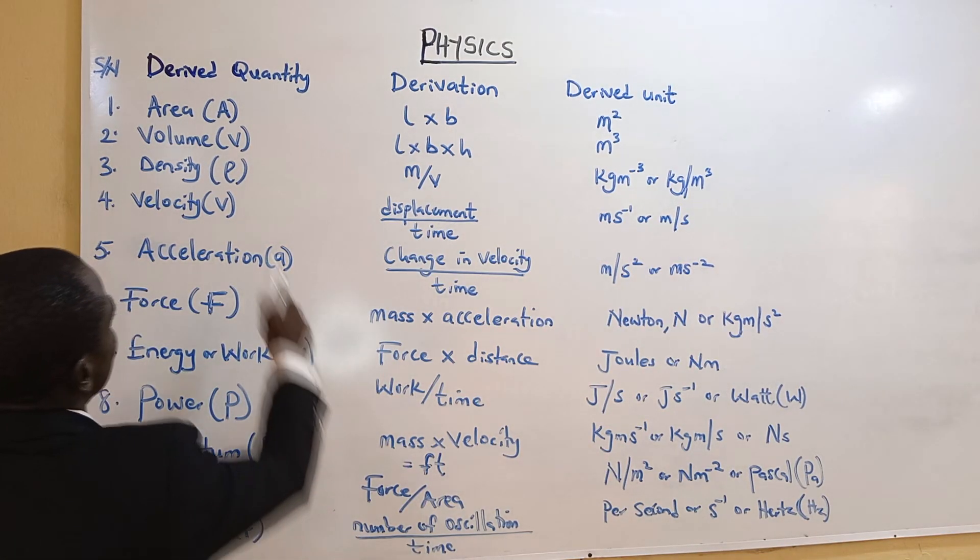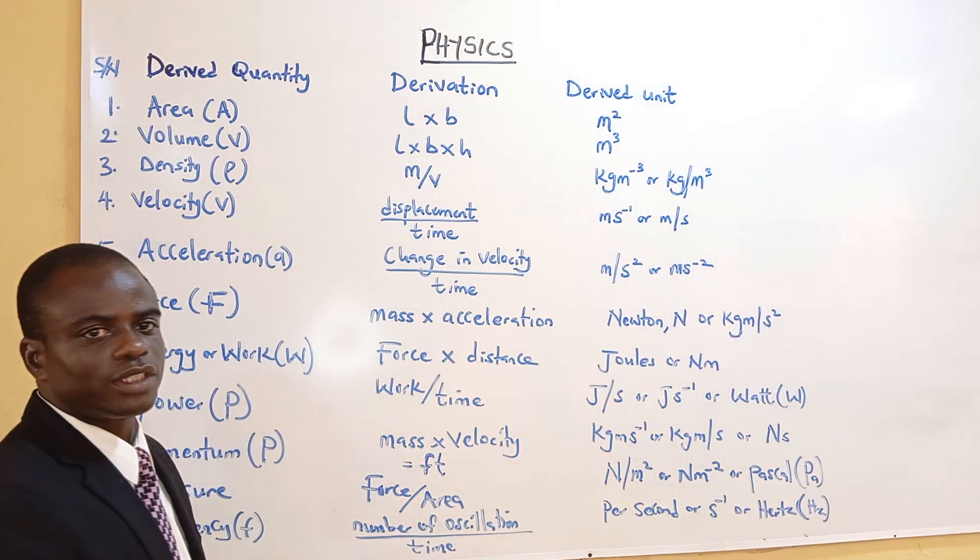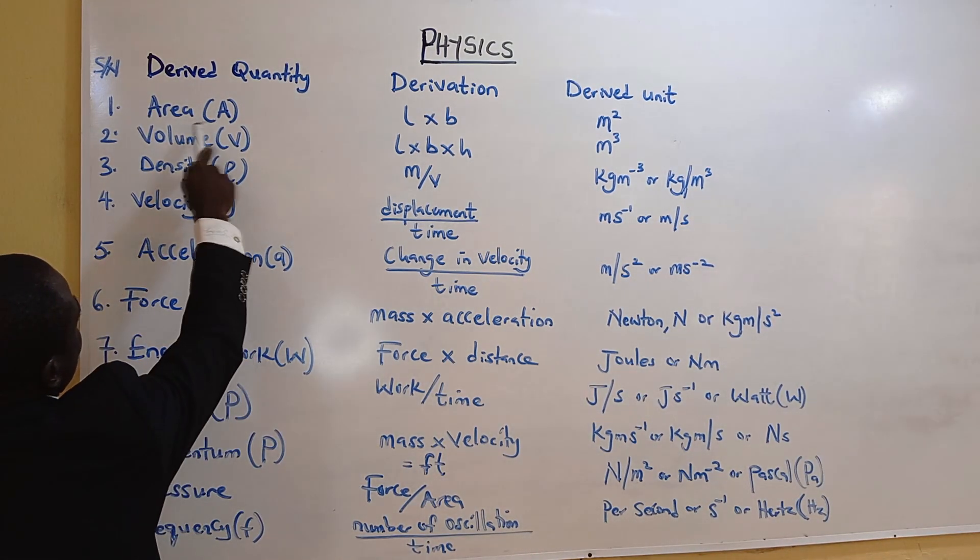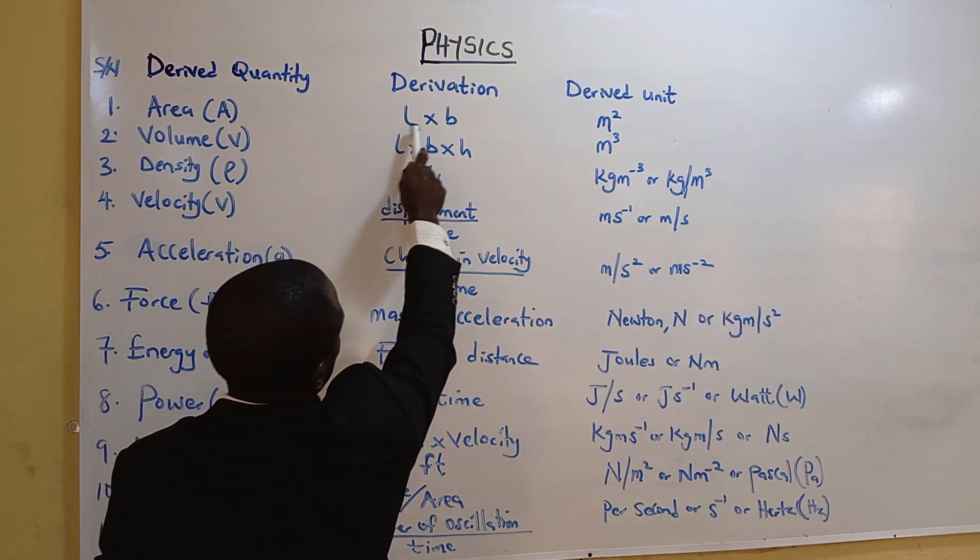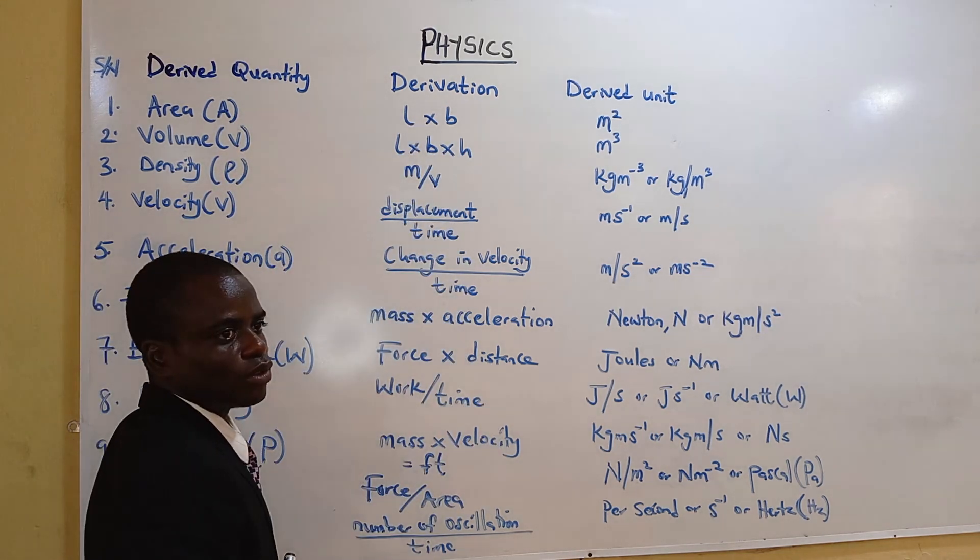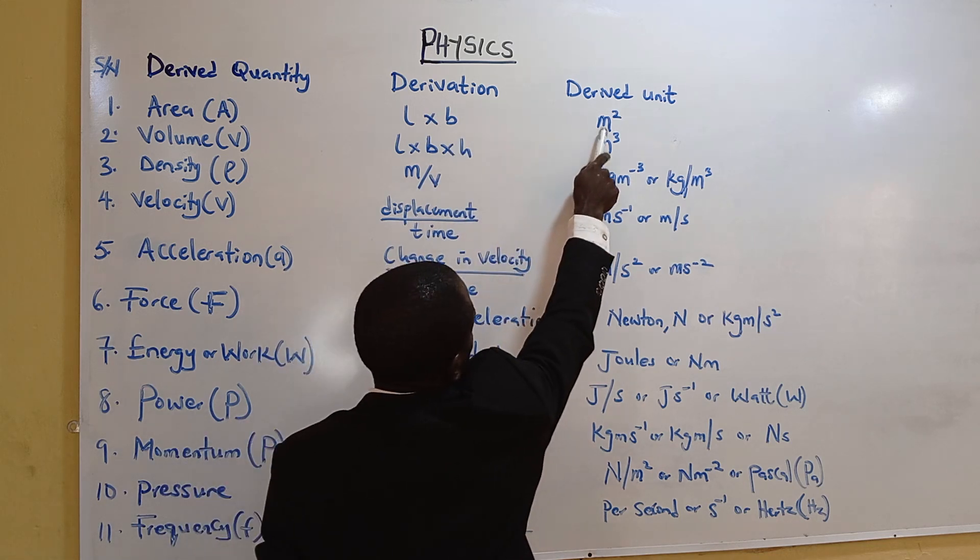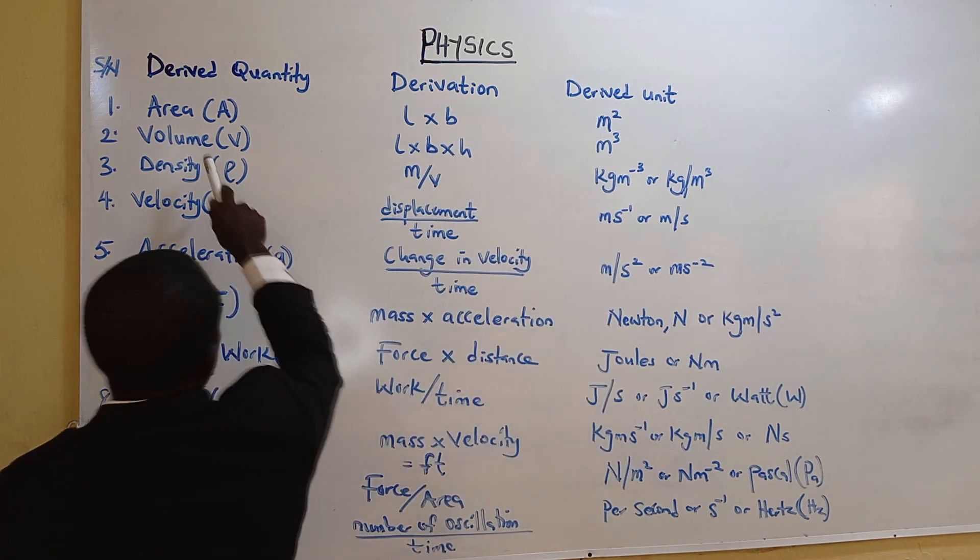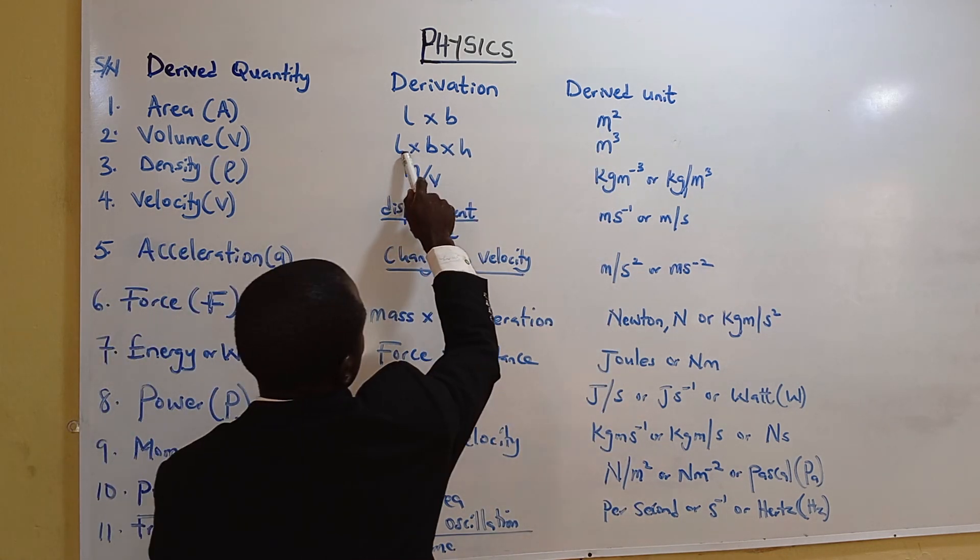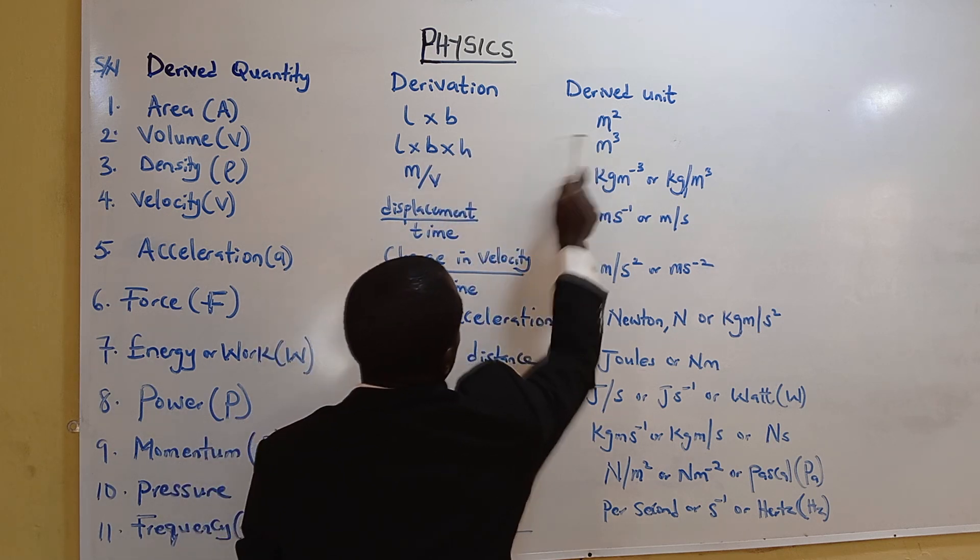You can see the examples of derived quantity. Area, use capital letter A, to join two fundamental quantities, which is length times breadth, gives us meter squared. Volume, length times breadth times height, meter times meter times meter, you have meter cube.